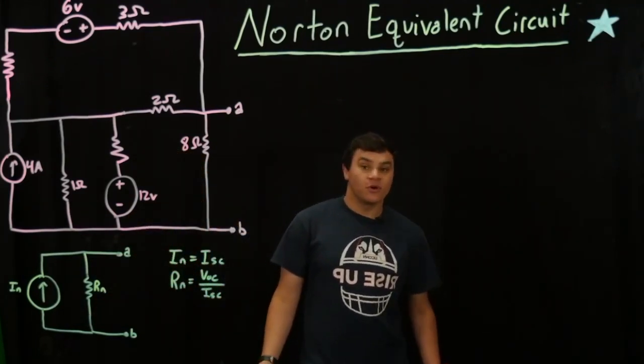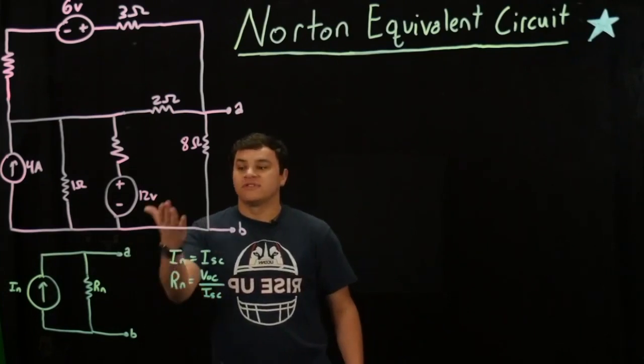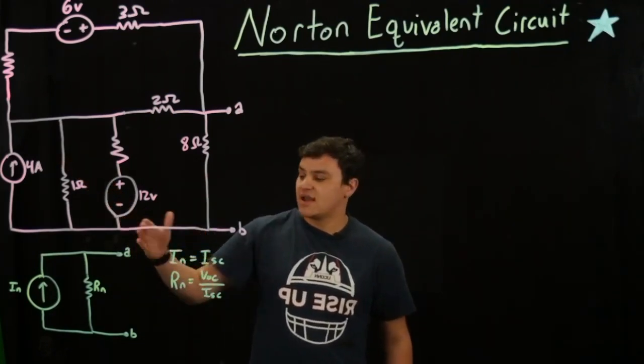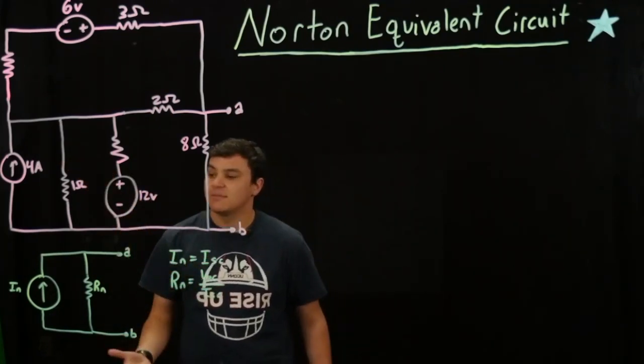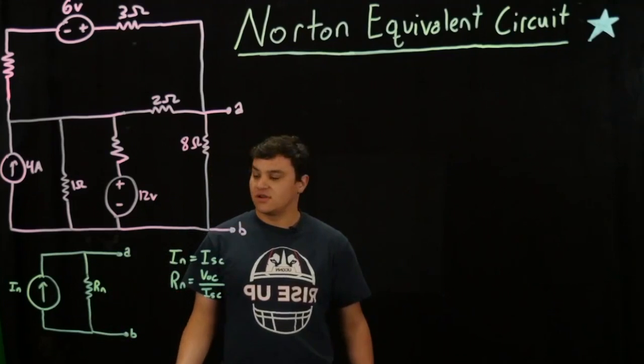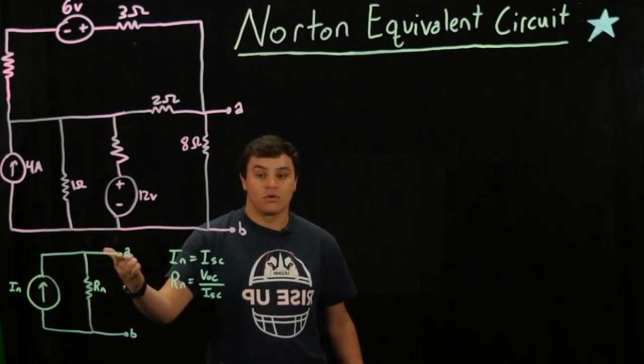We know from Norton's theorem that any circuit with resistors, voltage sources, current sources — any combination of those — can be represented as a Norton equivalent circuit, which is one current source and one resistor.